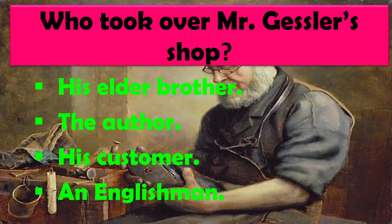Who took over Mr. Gessler's shop? Mr. Gessler ki dukan kisne li? Options: His elder brother, the author, his customer, an Englishman. Unke bade bhai ki toh death ho gayi thi, aur nahi lekhak ne li thi, nahi customer mein li thi. The right answer is an Englishman — ek London mein rehne wale Englishman ne unki dukan li thi.